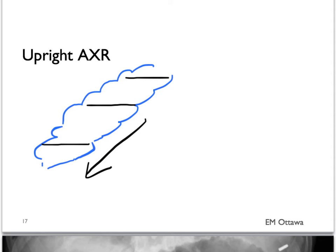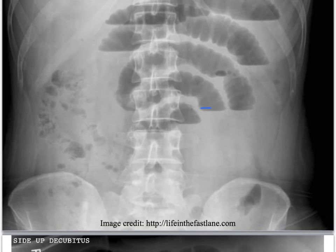On a film, they look like this. So these would be air fluid levels that you can see in multiple levels all across the lumen of the small bowel. Air fluid levels can also be seen in patients with gastroenteritis as well, or ileus post-abdominal surgery. It doesn't necessarily have to mean obstruction, and so air fluid levels need to be taken in context with the patient who is presenting.